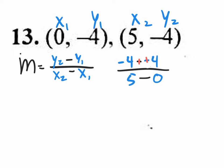Minus minus changes to plus plus. We have 0 over 5. And what is 0 divided by 5? 0. So the slope is 0.